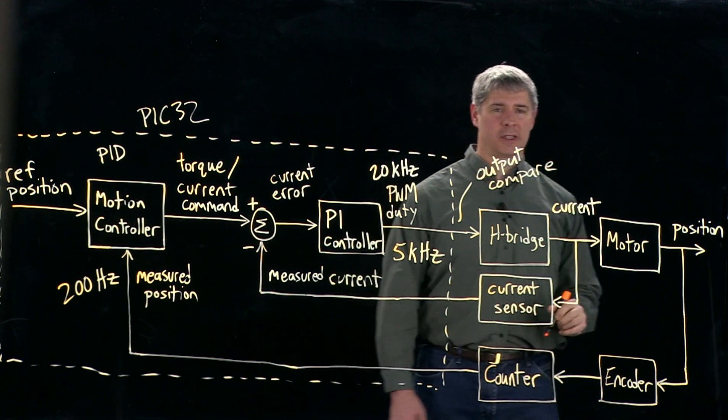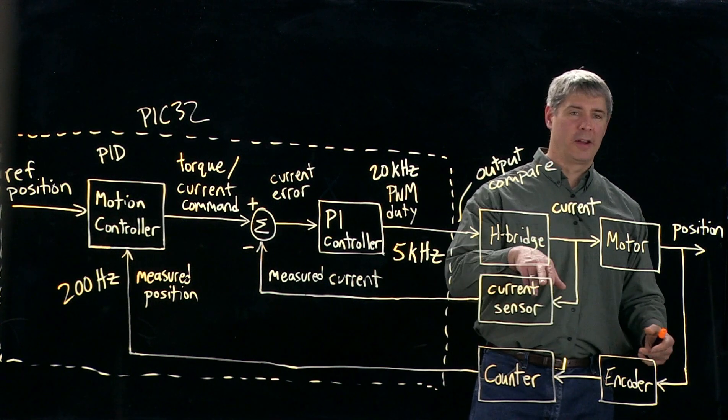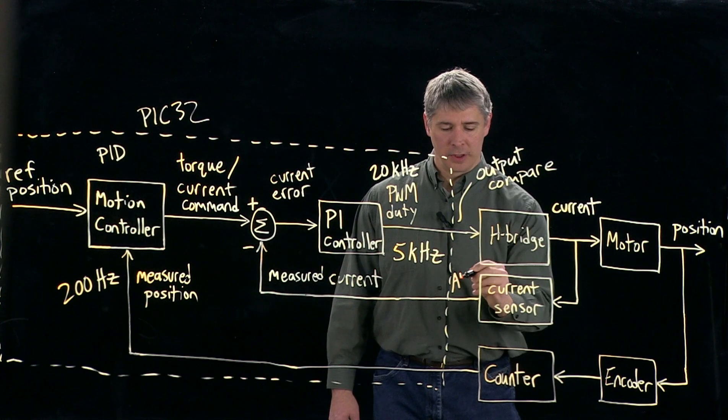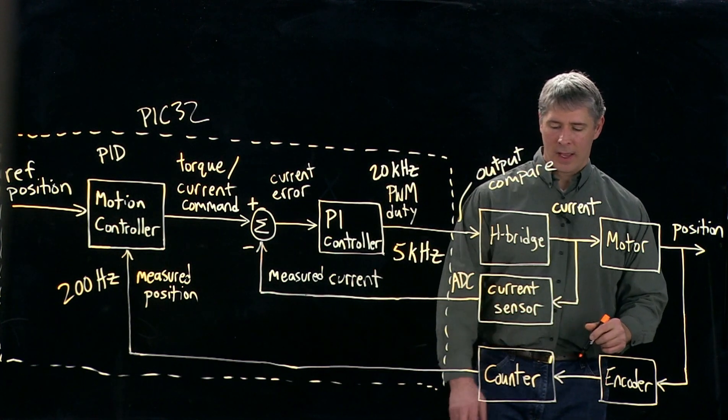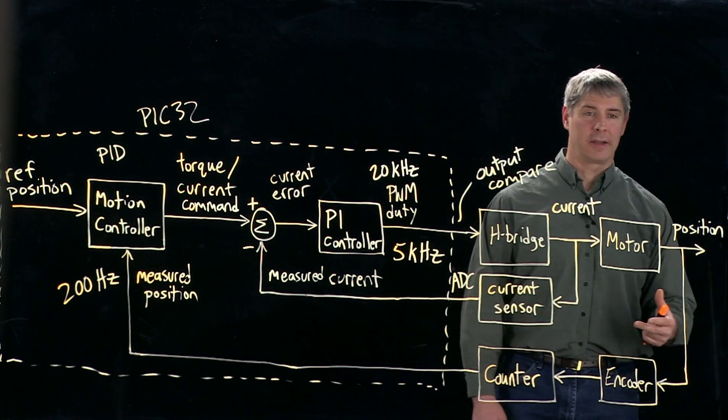The current sensor is going to be something that returns an analog voltage that is proportional to the amount of current going through the motor. So this is going to be an ADC input to the PIC. And the counter here, that's actually a separate chip. It's a PIC, really.